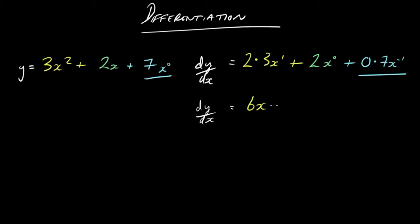It's going to be 6x plus 2x to the 0, or 2 times 1, plus nothing. So we don't even bother writing plus nothing. So y prime is 6x plus 2.